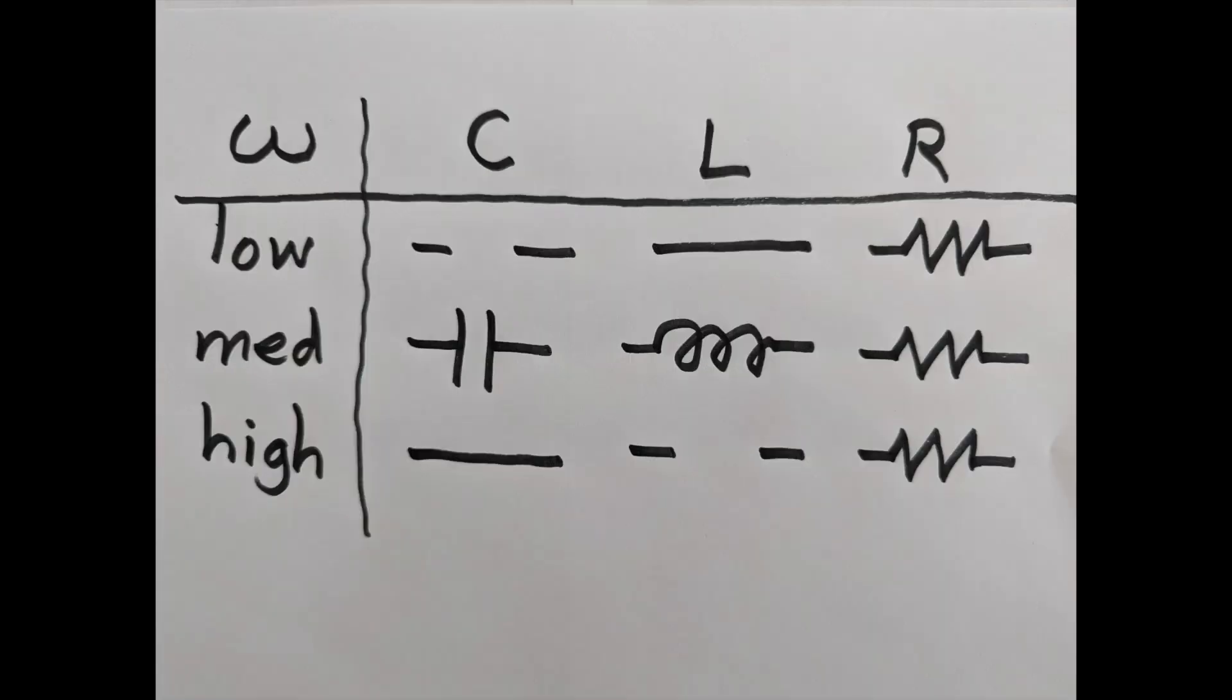Here's a quick reminder of how components behave at low, medium, and high frequencies. At low frequencies, a capacitor is basically a gap in the circuit, and an inductor is basically a wire. At high frequencies, it's the other way around. If we know what the circuit does at low frequencies and high frequencies, that's enough to figure out what kind of filter it is.